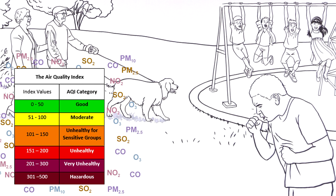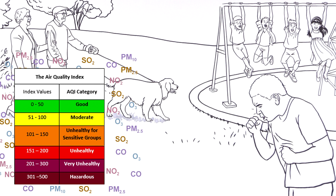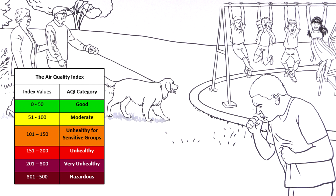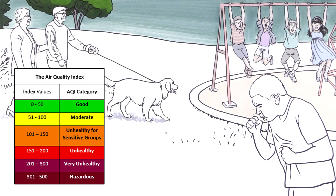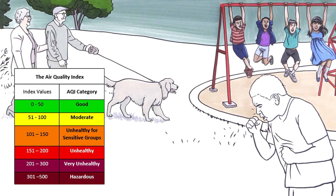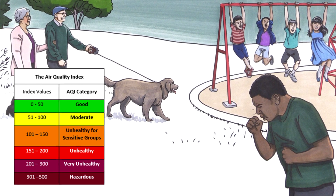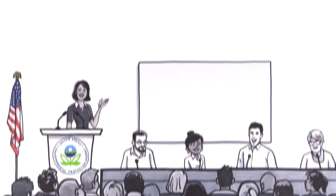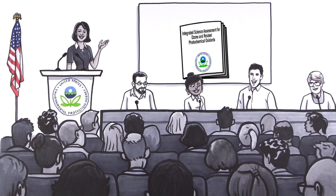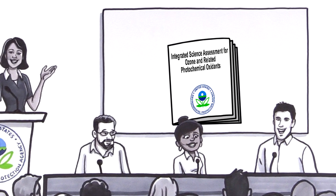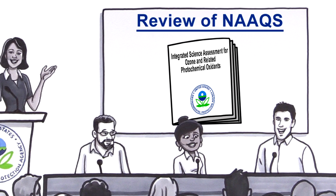EPA protects public health with air quality standards for these pollutants, including the health of at-risk populations like children, older adults, and people with heart or lung disease. To set each health-protective standard, EPA reviews thousands of studies on air quality and health. The Clean Air Act directs EPA to review the standards every five years.